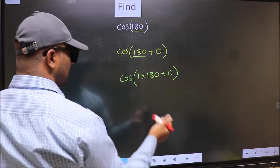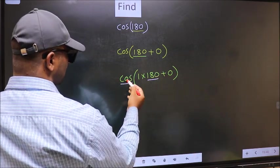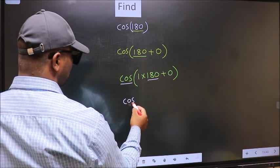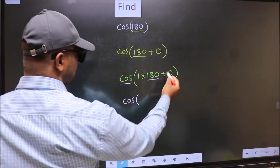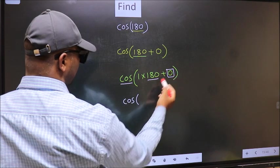Next, here we have 180, so cos is not going to change, it will remain cos. And inside, we get this angle 0.